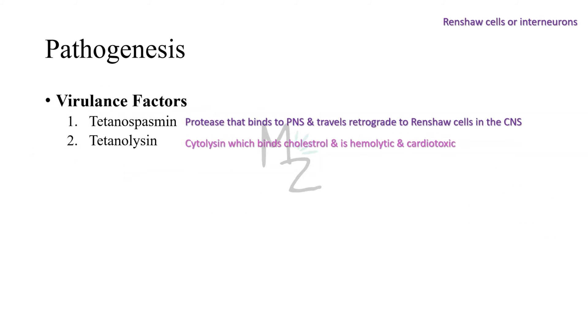The second virulence factor is tetanolysin, a cytolysin that is an oxygen-labile hemolysin. It binds to cholesterol and is both hemolytic and cardiotoxic.